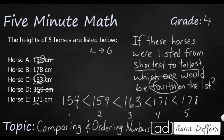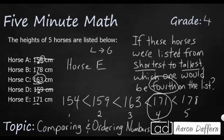Let's verify the order: 154, 159, 163, 171, and 178. The question asks which horse would be fourth on the list. The fourth value is 171, but your answer is not the number — it's which horse. Horse E has a height of 171, so the answer is Horse E. On a multiple choice test, it would list different horse letters, and the answer would be Horse E.